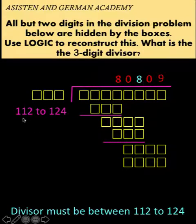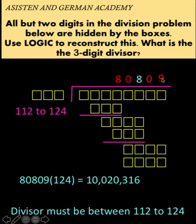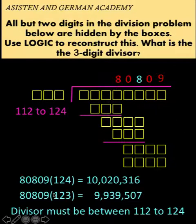And our divisor could be any whole number between 112 to 124. So let's find out what's the exact divisor. Let's try first the maximum possible divisor of 124. So this quotient times 124 resulted to this four-digit number. So no problem there. Let's try the next lower whole number.